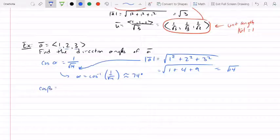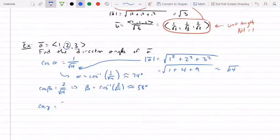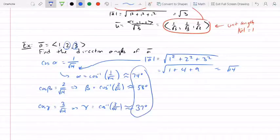Now if I do alpha is cosine inverse of 1 over the square root of 14, I actually get about 74 degrees. Cosine of beta would be 2, that's a2 here, over the same magnitude, square root of 14, so beta, which is the cosine inverse now of 2 over square root of 14, is approximately 58 degrees. And then cosine of gamma would be 3, from here, over the square root of 14, so gamma is cosine inverse of 3 over the square root of 14, or approximately 37 degrees. So there are your direction angles.